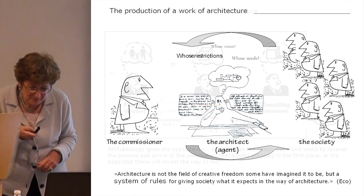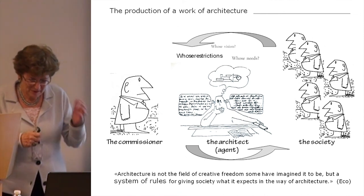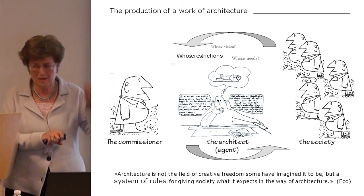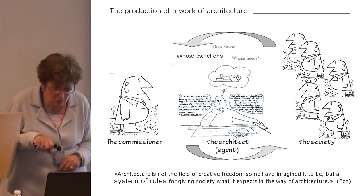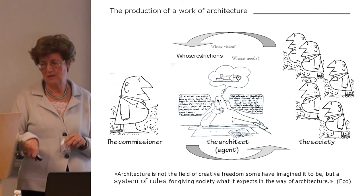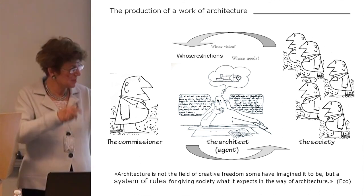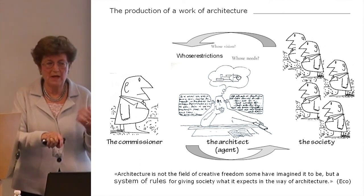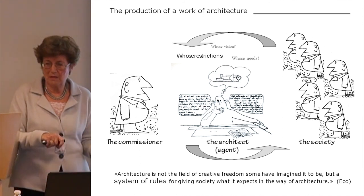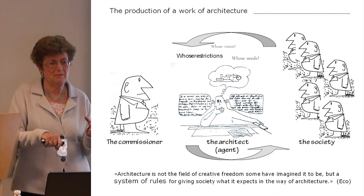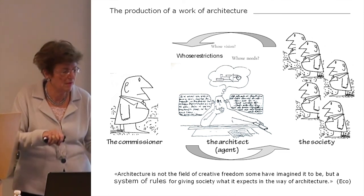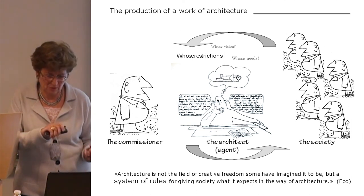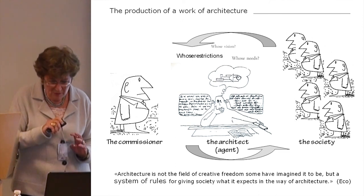How do we get there? Thanks to what Eco says — that architecture is not the field of creative freedom some might imagine it to be, unless we're talking of today's star system architecture. It's a system of rules for giving society what it expects in the way of architecture. This is facilitated in pre-industrial societies by tradition, which is all about standardization, models, and variations — things that have shown how they work, so you just repeat them. This is of great help from the point of view of archaeological investigation, because what we are trying to find is this system of rules.